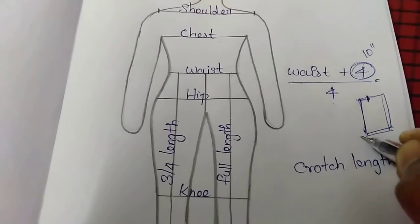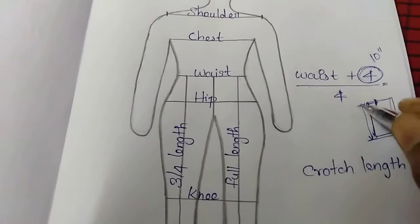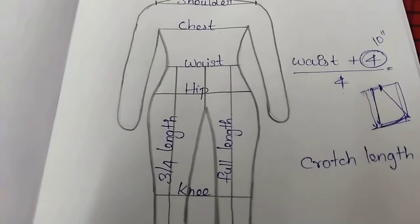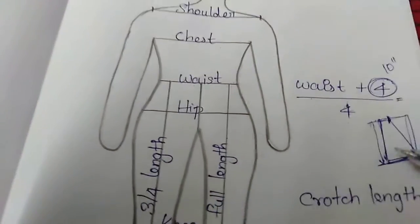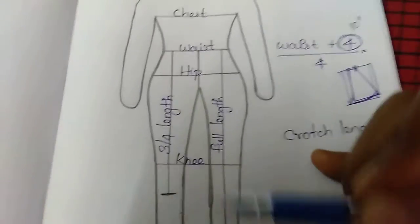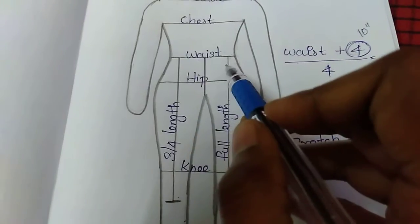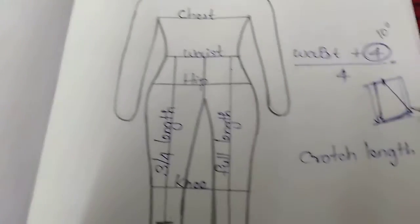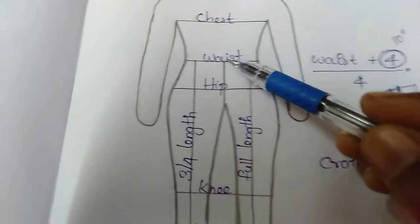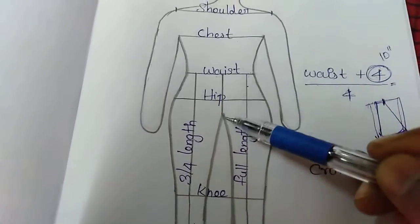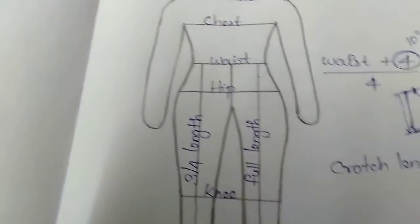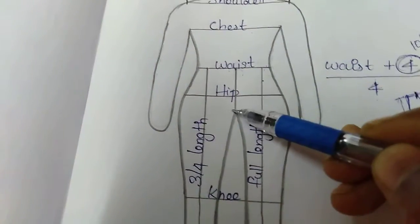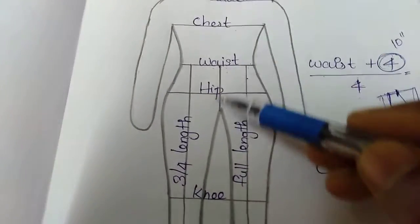This is skirt length — skirt length and crotch length. We cut the skirt, so this is the length of skirt. Waist length measure, calculate and how we mark the cloth. And this is the crotch line — this is the length we cut, this is the crotch line.